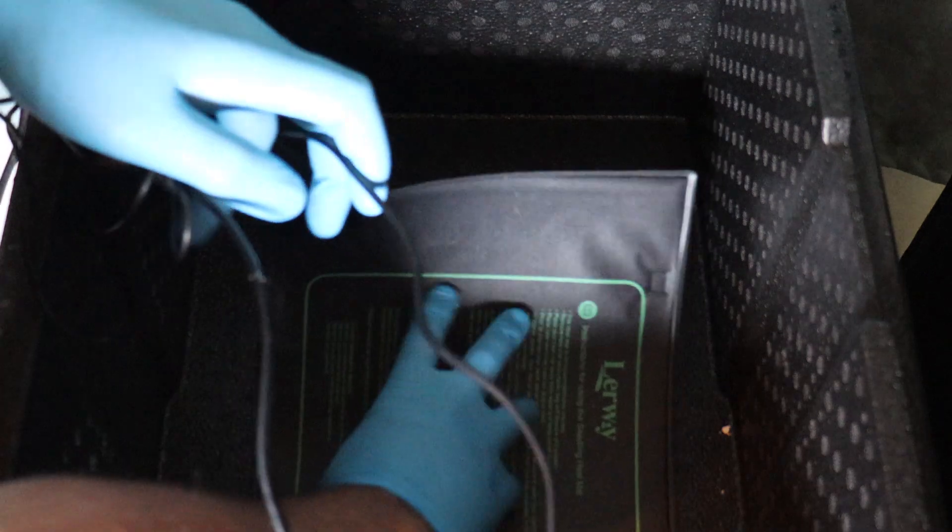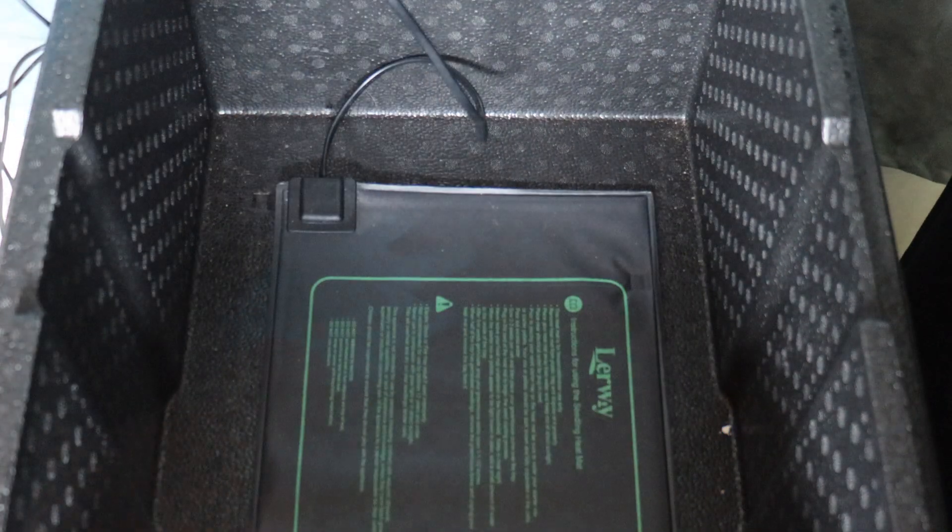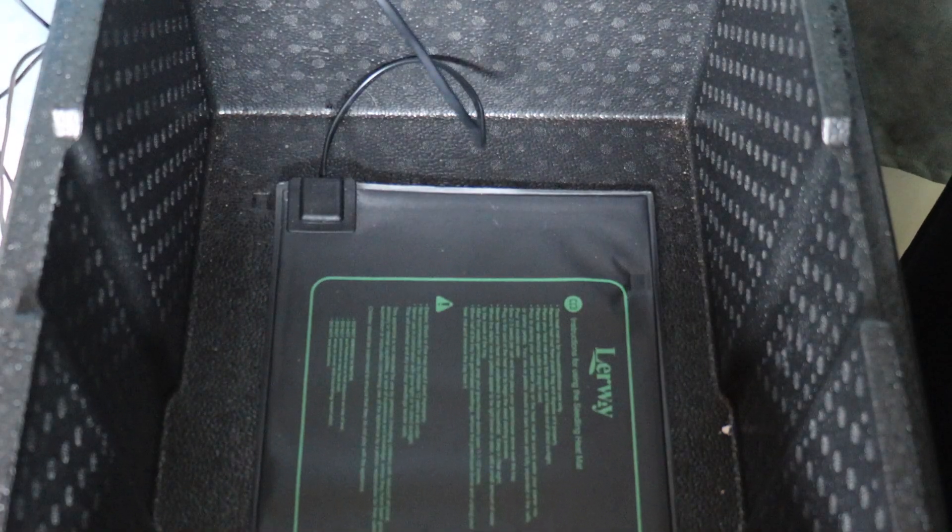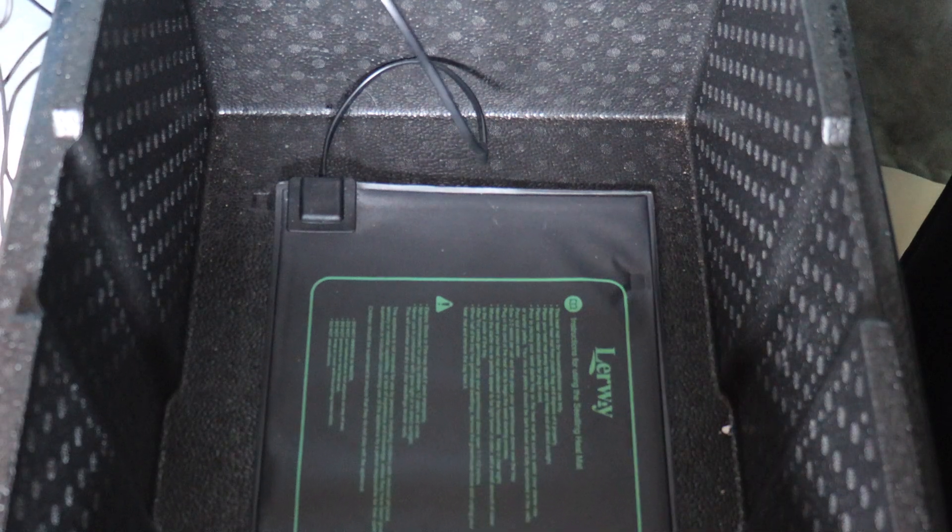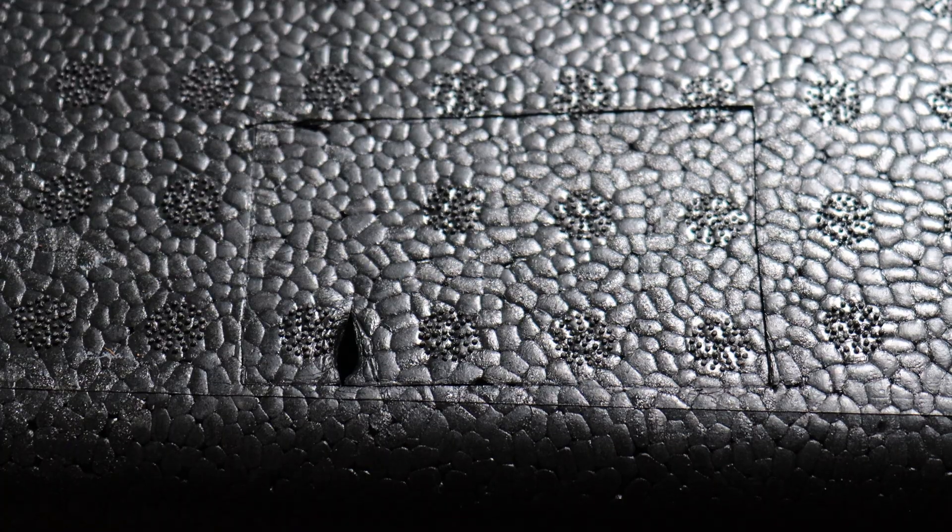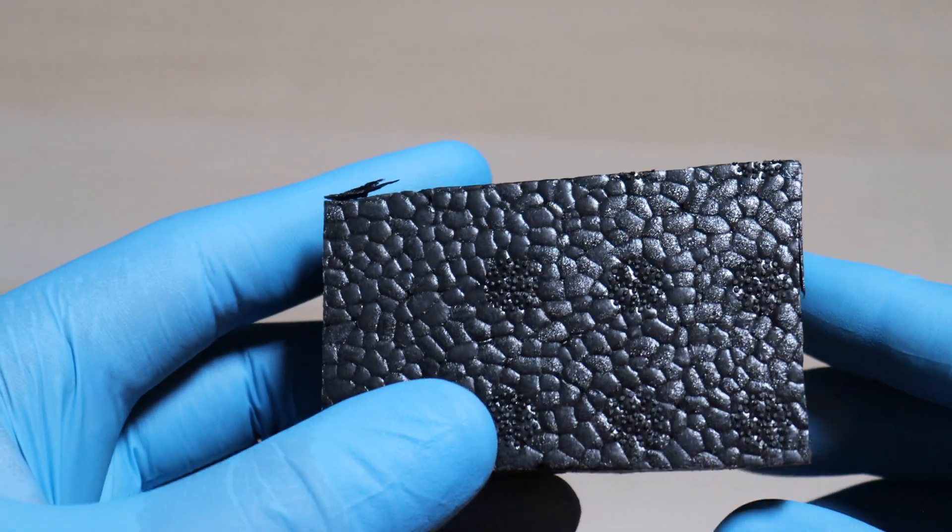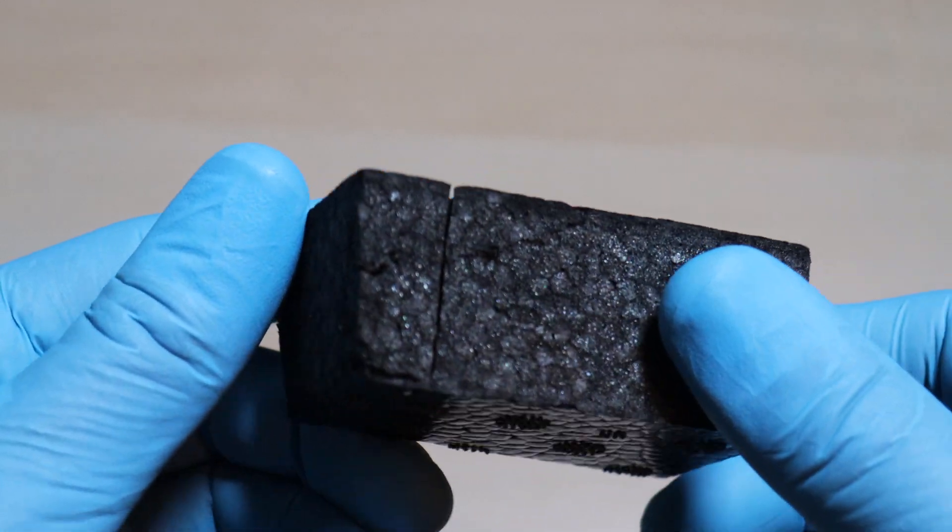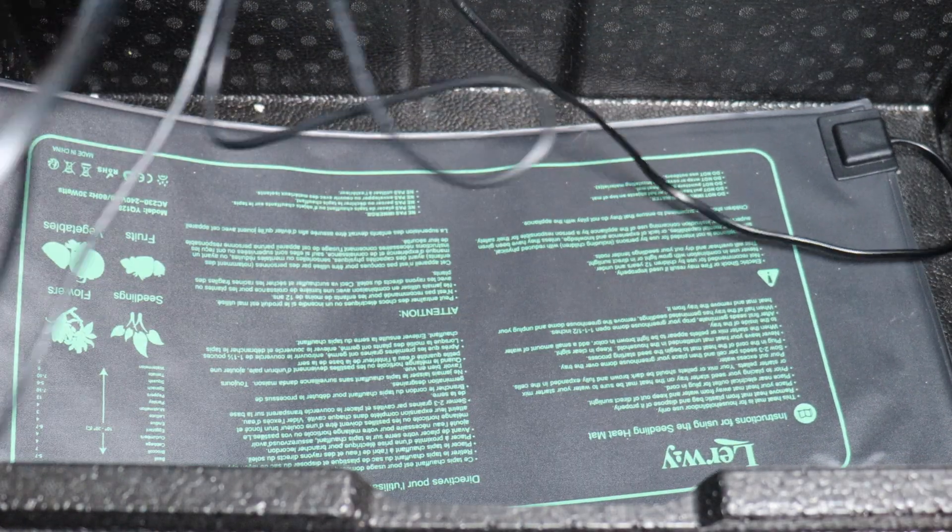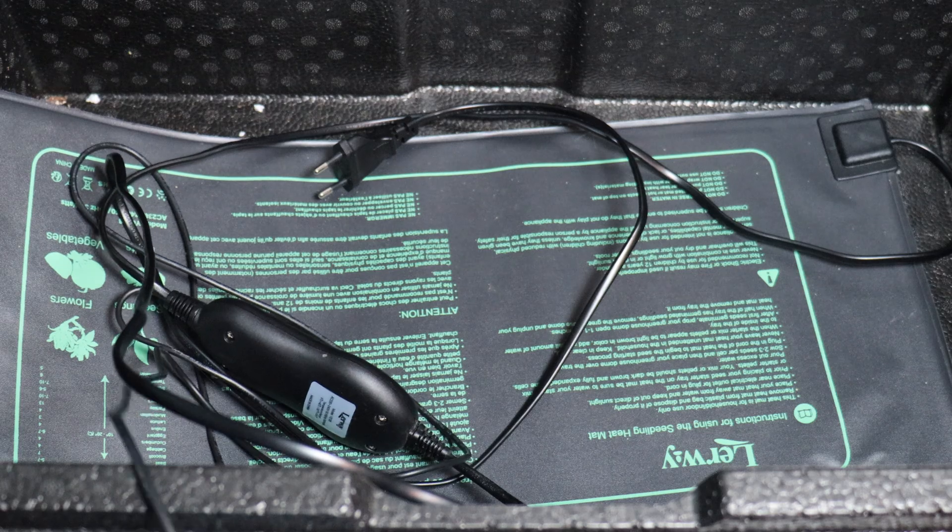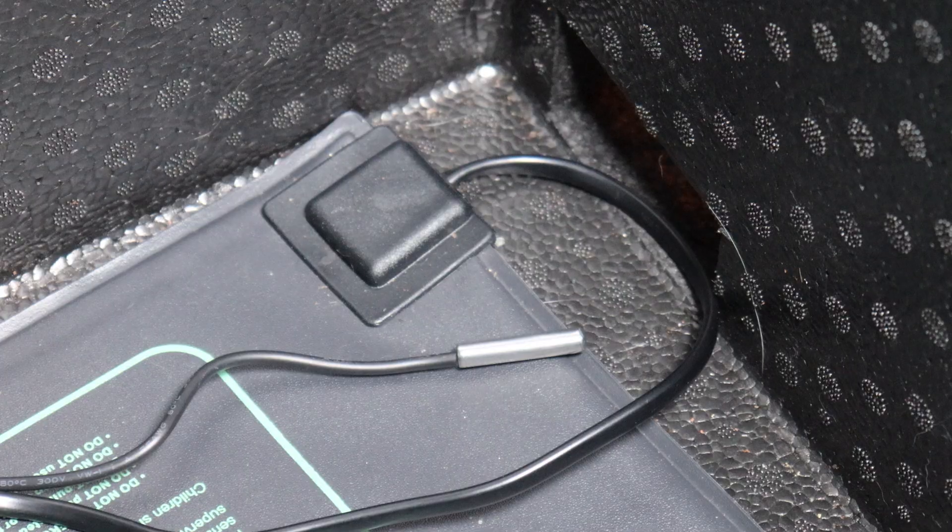All right, now it's time to assemble the incubator. I like to take the heating mat and note where the power cable is. This will inform where we make our first cut. Right there. That's where we want it. Cut a square hole and with the foam you've cut out, make a little cut like this. This is where the power cord will fit into, and then it's just a matter of putting the heating mat in and pulling through the cables.